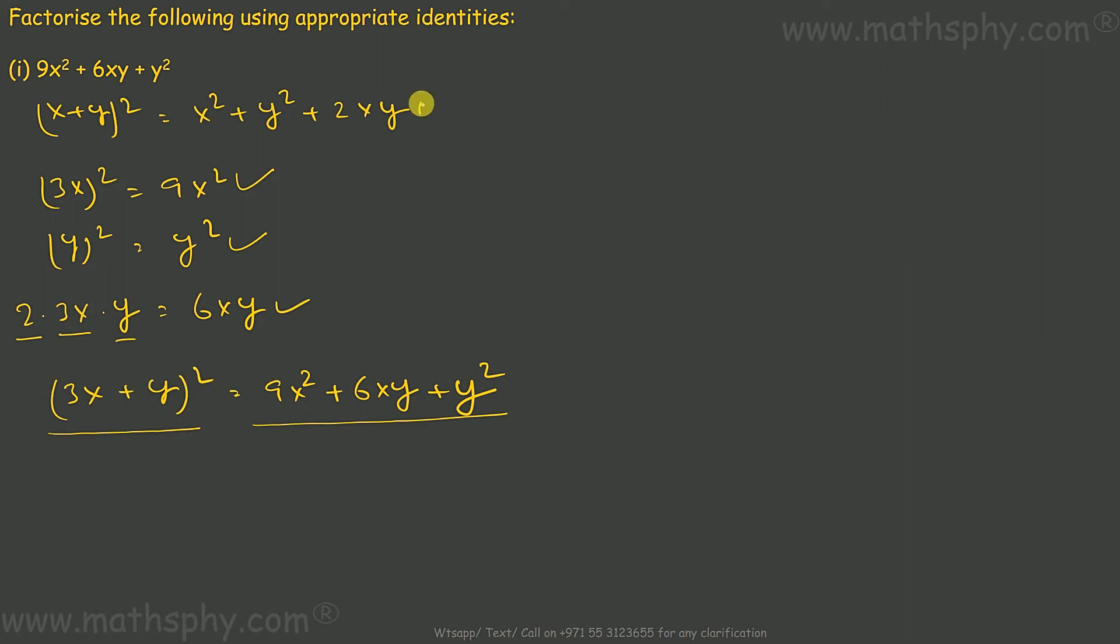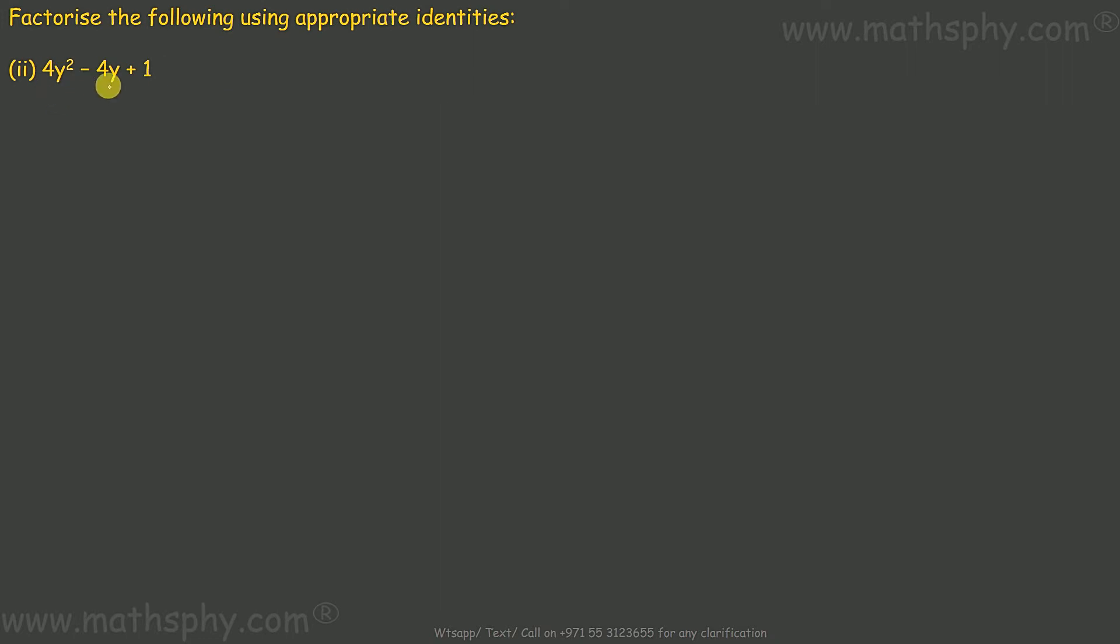This one here: if you remember this identity, (x - y)² comes to x² - 2xy + y². Here this can be 4y² - 4y + 1.